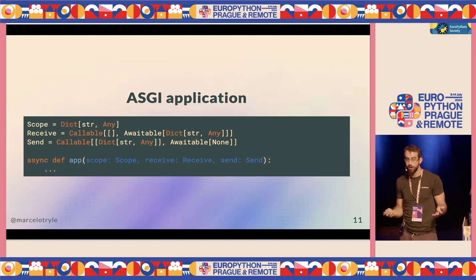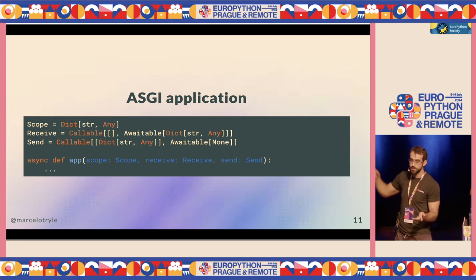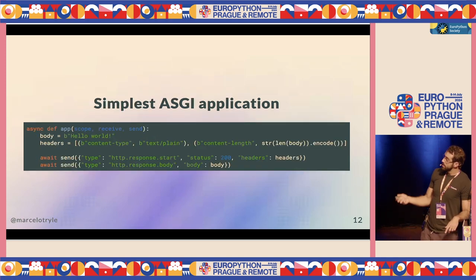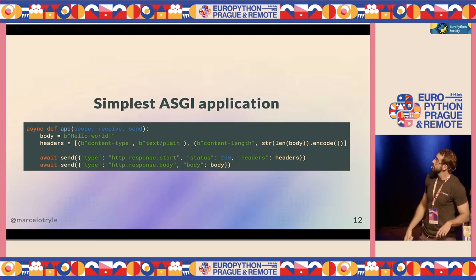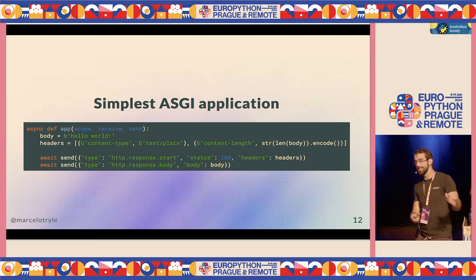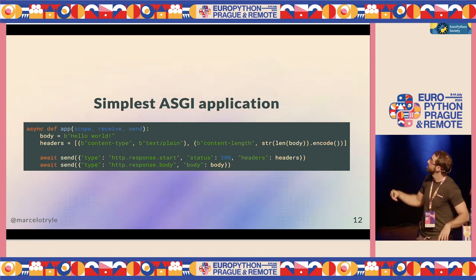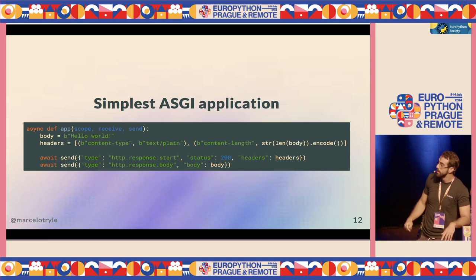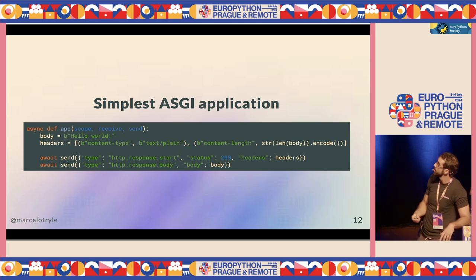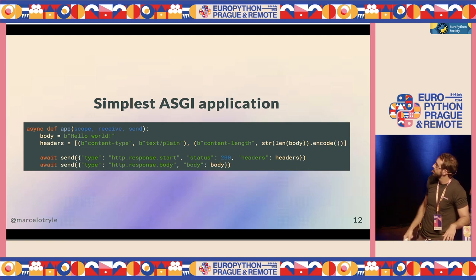This is the most simple ASGI application you're going to find. It has the content type and content length in the headers, and then a small body which is just hello world. We use send twice — we first send the HTTP response start, which sends the status and the headers.